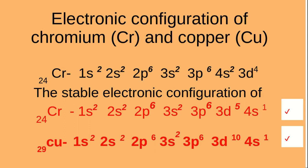Write the electronic configuration of chromium, atomic number 24. Usually we write it as 1S2, 2S2, 2P6, 3S2, 3P6, 4S2, and 3D4.